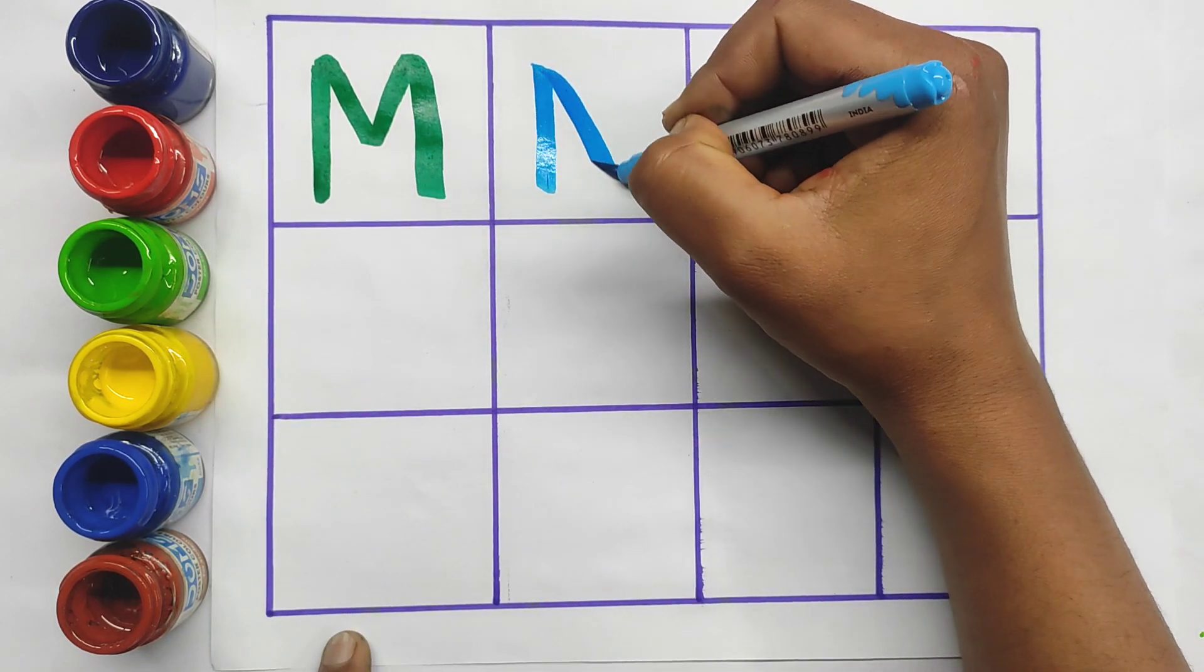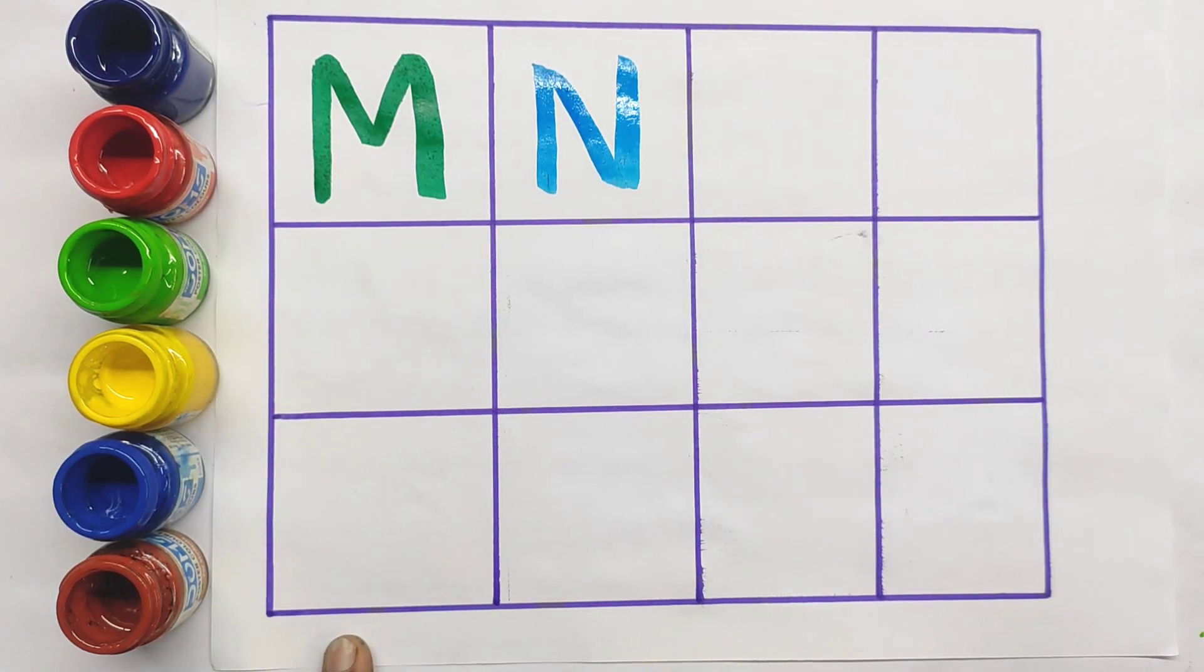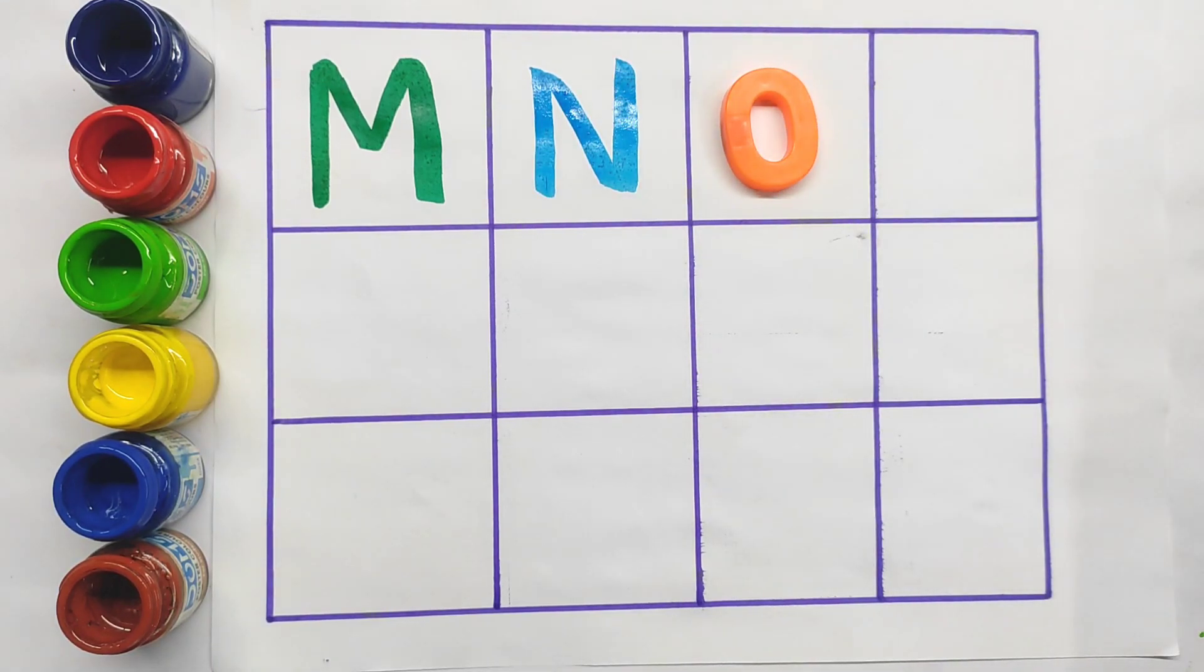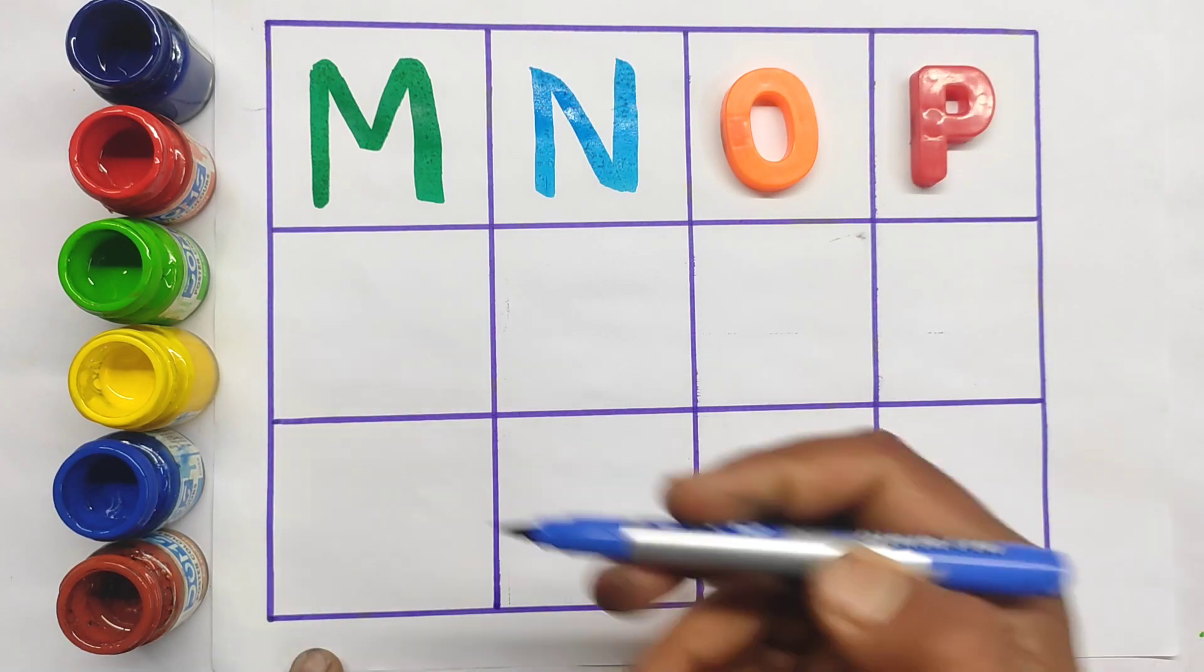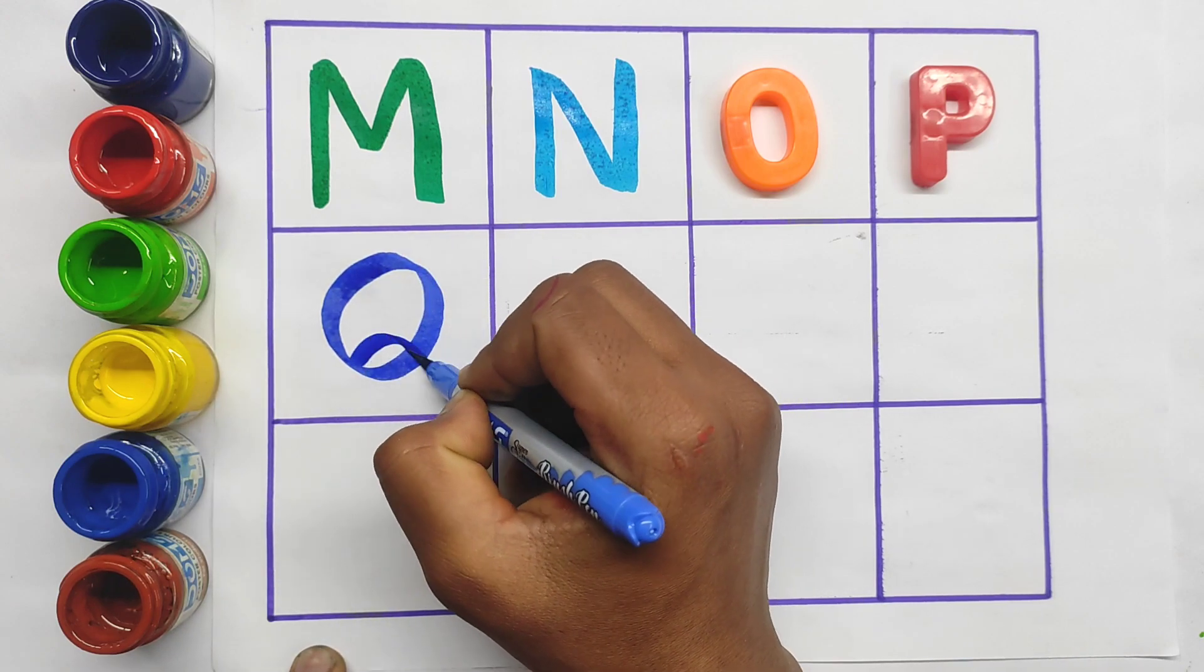N, N for nest. O, O for orange. P, P for parrot. Q, Q for queen.